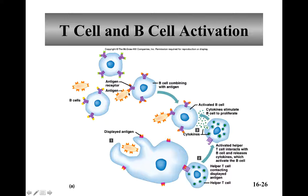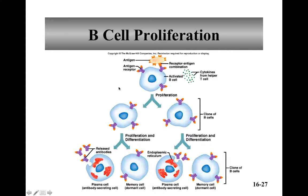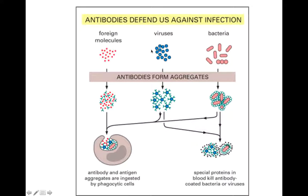B cells can also become active when they directly contact the antigen — the B cell with the correct receptor antibodies finds the bacterium, becomes active, and produces copies of itself. Those copies are plasma B cells and memory B cells. Plasma B cells release antibodies specific to fight the bacterium, while memory B cells remain for future infections. If a memory B cell encounters the same infection again, it goes through the whole activation process again.